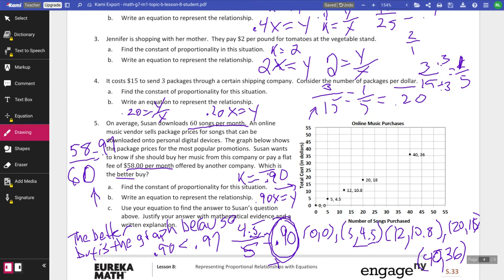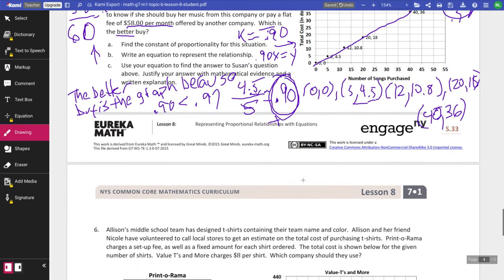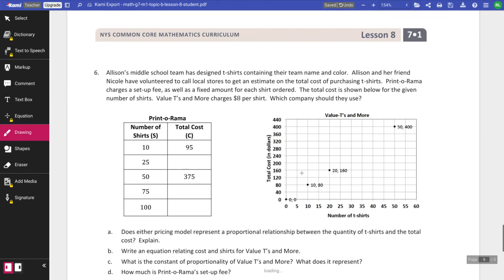But in this case, we can just say the graph is better than the 97 cents. Now, if she were to buy a hundred songs per month, if she were to buy 100 songs per month and she were paying $58, well, then that would end up being only 58 cents per song. And that would be a much better deal. But because she's only buying 60 songs per month, then this other one, the second one was the better deal. The graph is the better deal.